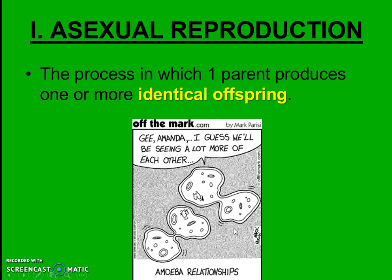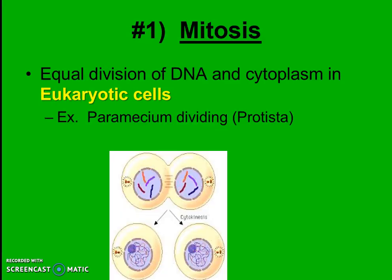To better understand this idea of making clones from a single parent, we're going to go through a couple of examples. Our first example is mitosis, which is the way we make new body cells, but if I'm a single-celled organism such as a protist like amoeba — which is a single-celled eukaryote — this is how I would make clones or babies. So paramecium or amoeba just divides and makes an identical copy of itself; that's how it reproduces, just through mitosis.